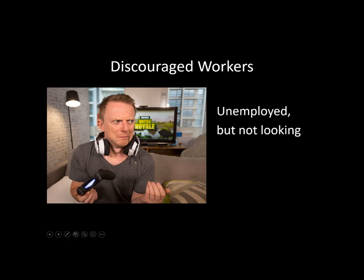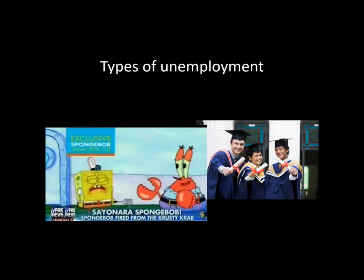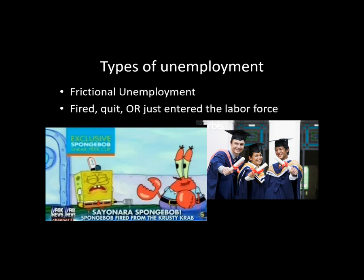We do not count discouraged workers in the unemployment rate. There are four types of unemployment — some people say three, but there really is a fourth. Understanding these matters because it explains why people lose their jobs and why they can't find a new one. The first type is frictional unemployment: when somebody just enters the labor force, like a graduate, or they've been fired or quit their job. They're in between jobs.